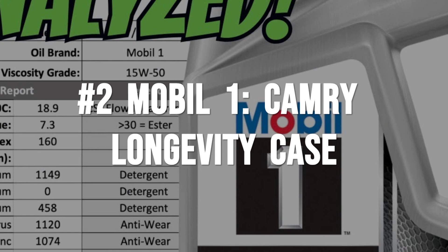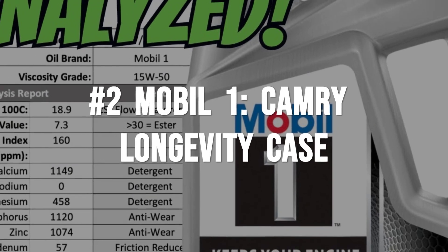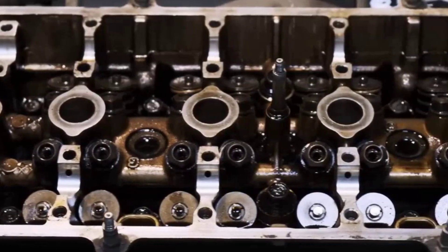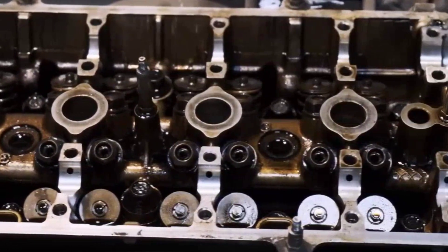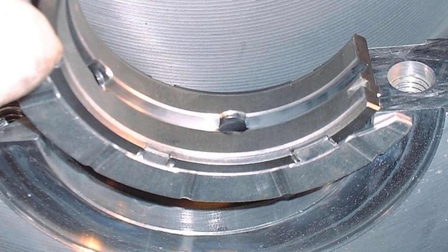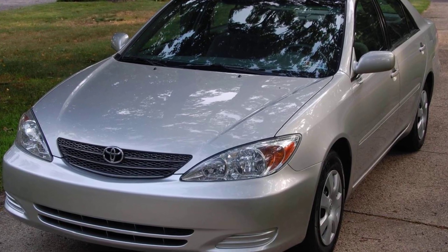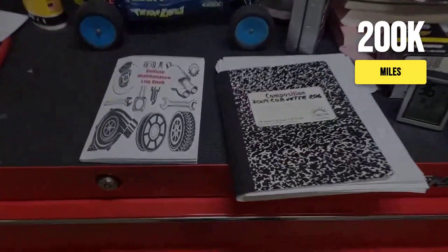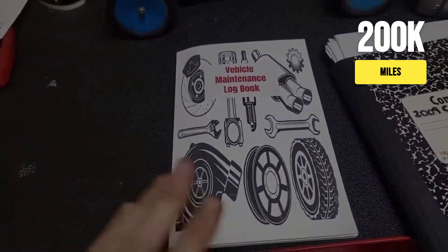Mobil 1 Extended Performance earns its runner-up spot with proof that goes beyond numbers on a lab report. In teardown after teardown, engines that ran on Mobil 1 for 200,000 miles or more show what those lab claims actually mean inside the metal.